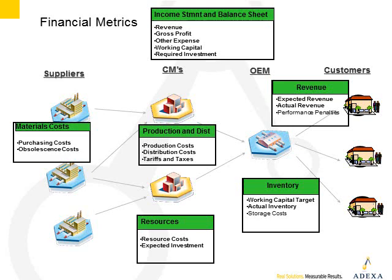On the inventory side, we want to look at working capital targets — the aggregate target we have for working capital. We want to understand whether or not the plan will be meeting those working capital targets, and if not, where do we have to reduce inventory in order to hit them. We want to measure and view how we're doing in terms of the expectation of hitting the financial plan based on the supply chain plan. Also included is storage costs, so we know whether we're incurring excessive storage costs due to high inventory levels.